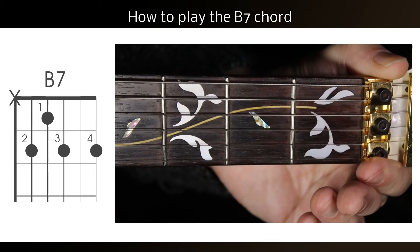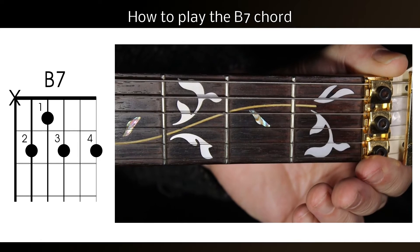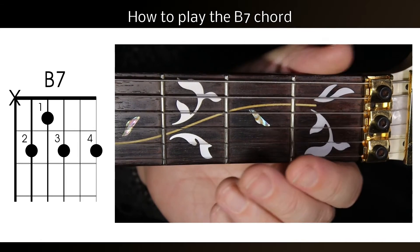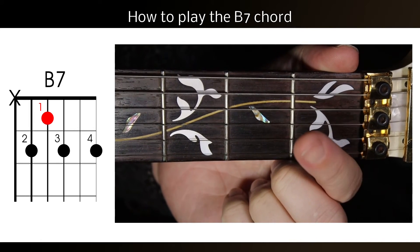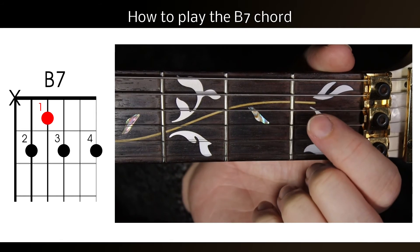Now, let's see the B7th played with the guitar. Firstly, press the first finger in the first fret of the D string.